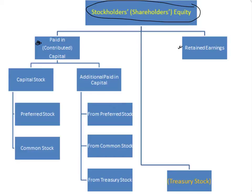The second part is retained earnings — two words, they're exactly what they are: earnings retained in a corporation, meaning not given away as dividends. Year to year you will have net income and net losses coming in, and then you will put dividends out of this section, and whatever is left is retained in the company.